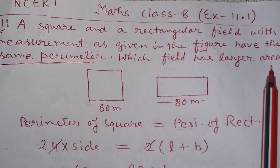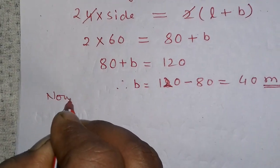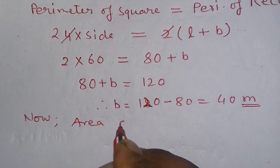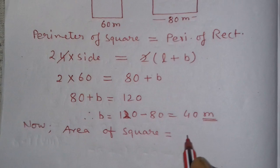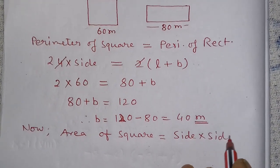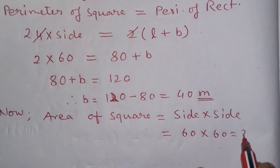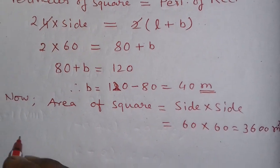So we want to find now, we want to find area of both figure. Area of square is equal to side into side. Side of square is 60, multiply 60, that is 3600 meter square.